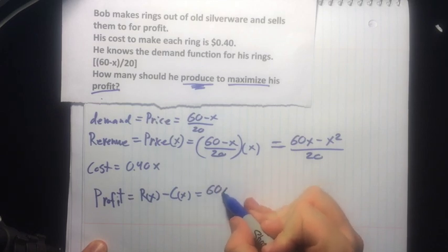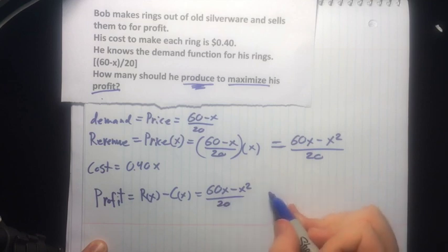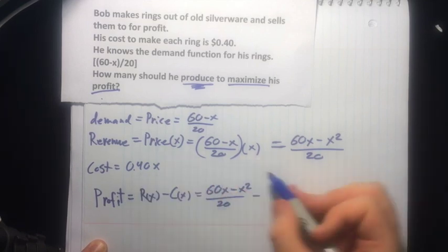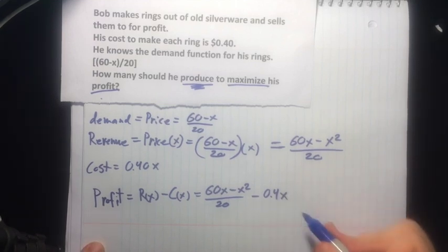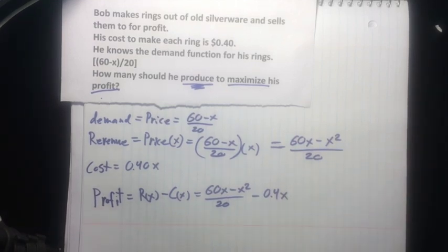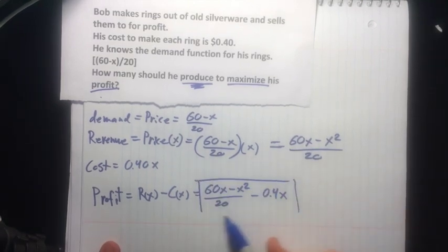Our equation is going to be (60x - x²)/20, minus our cost here, 0.4x. I'm just going to drop that last zero, which is fine. I'll box this because it's something we're going to focus on.